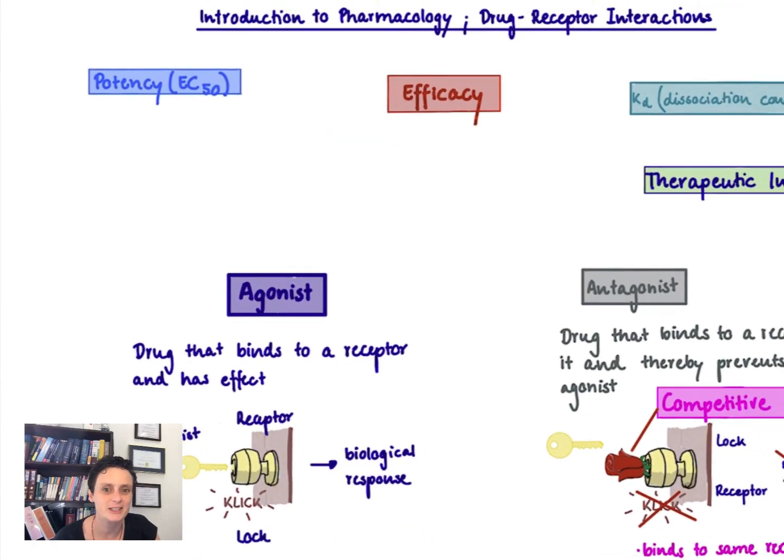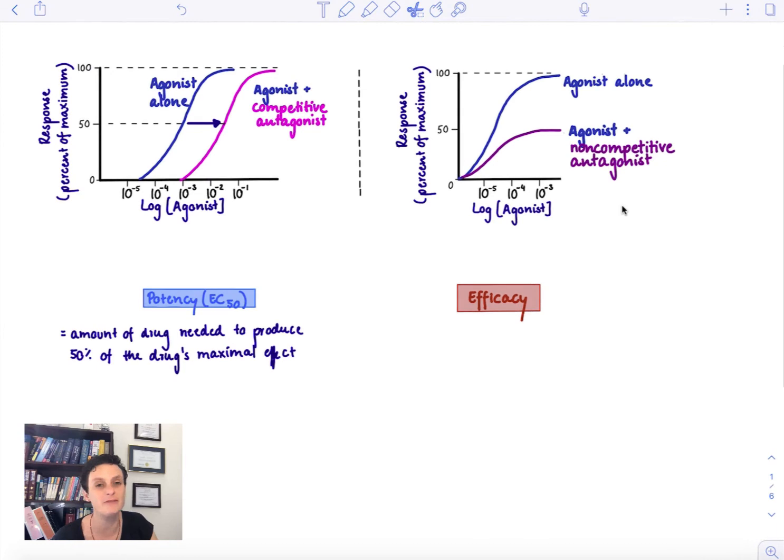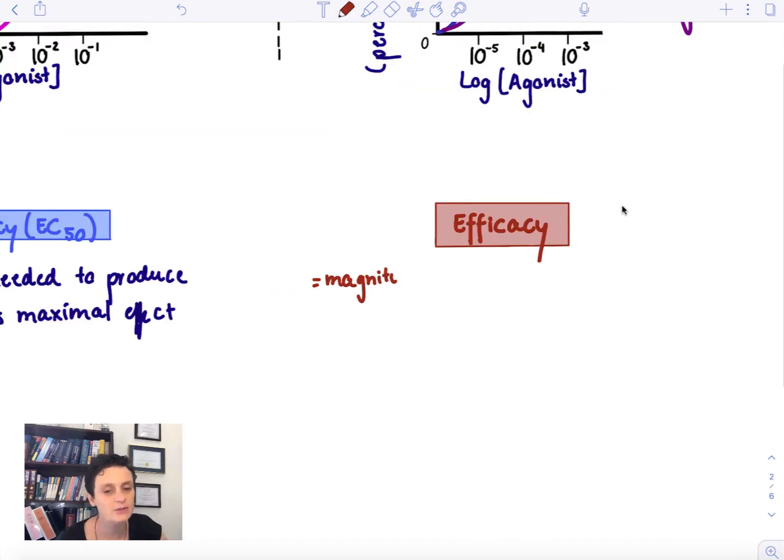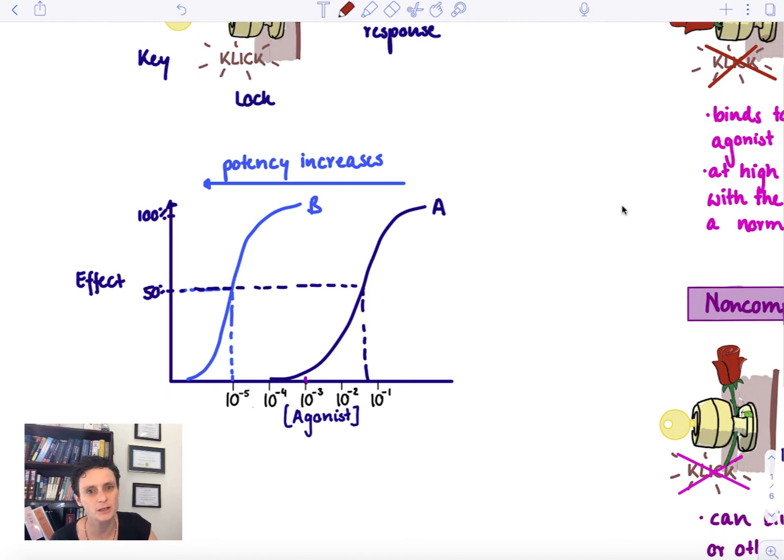Let's think about the next characteristic a drug can have. It's about efficacy. How is efficacy defined? It's the magnitude of the maximum response of a drug. So efficacy data we get from the same type of graph because we just want to know what is the maximum effect of the drug.